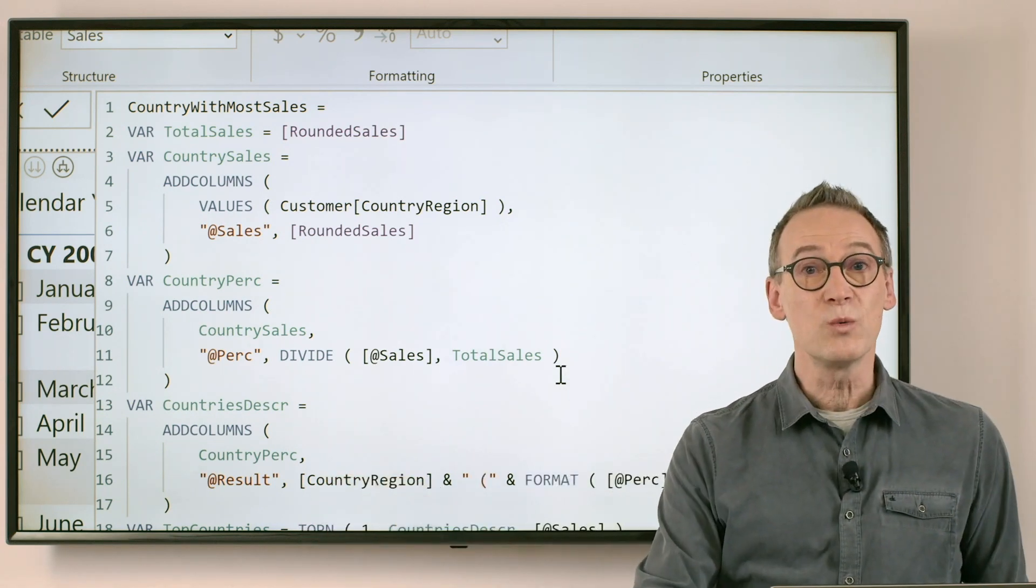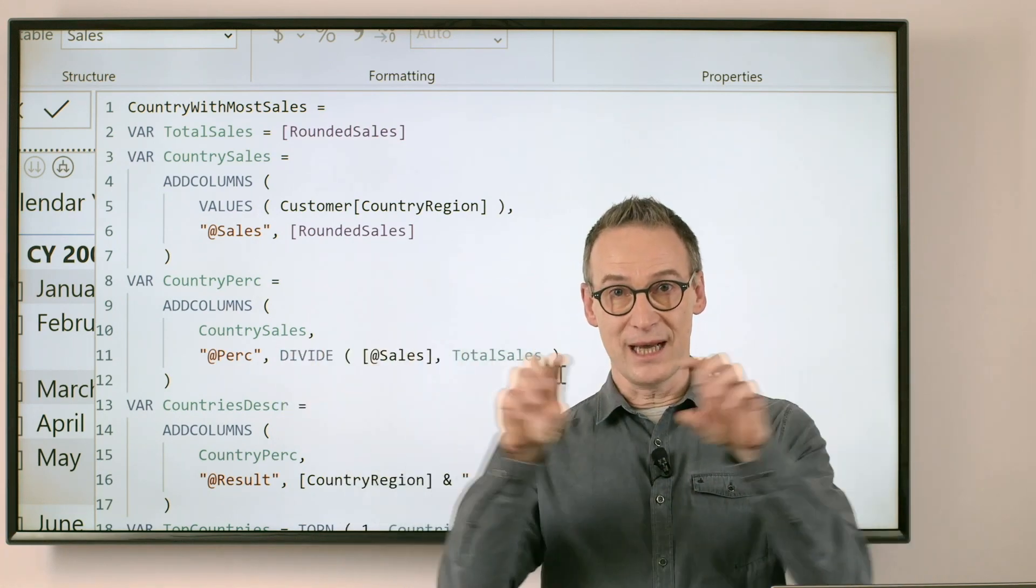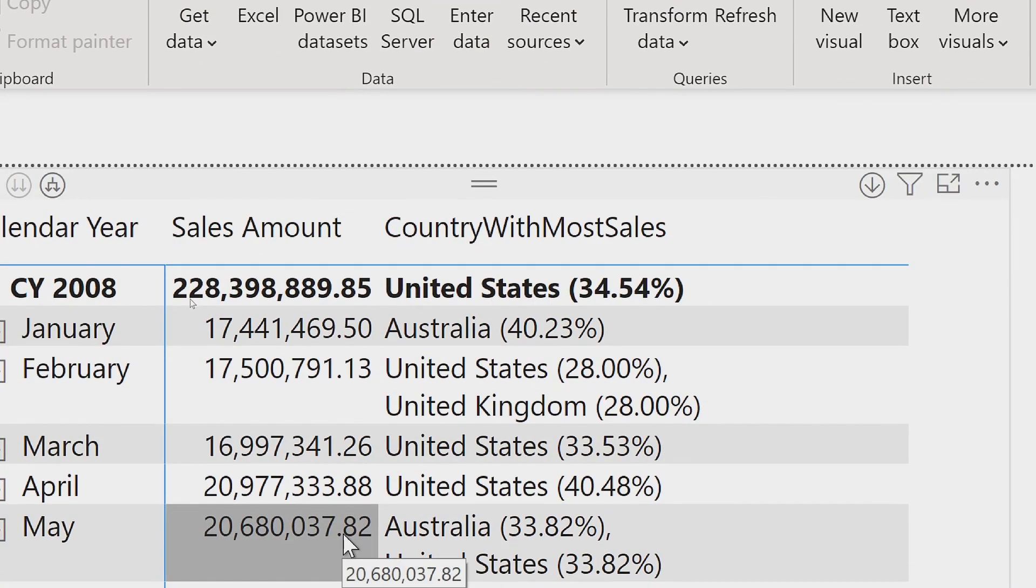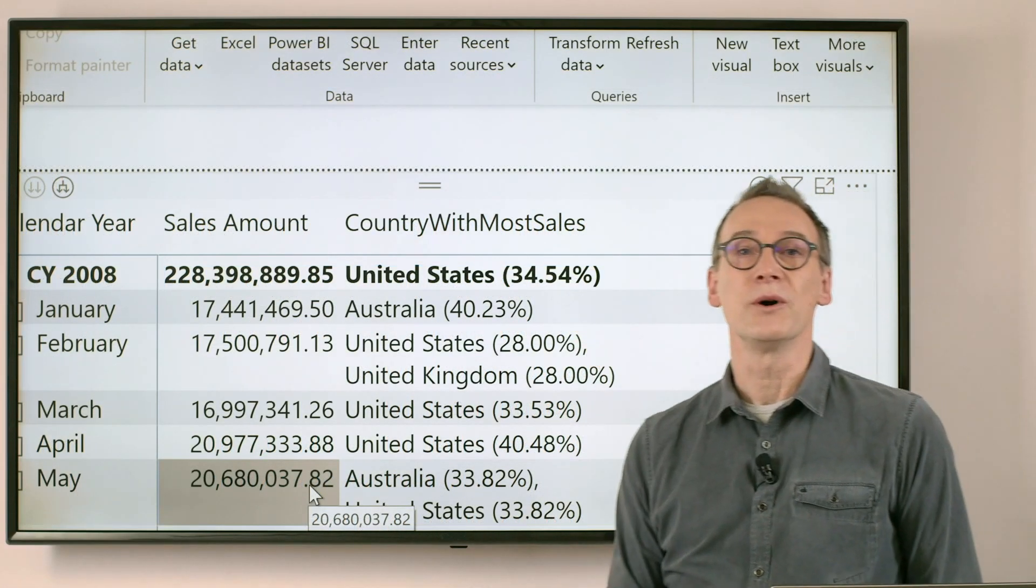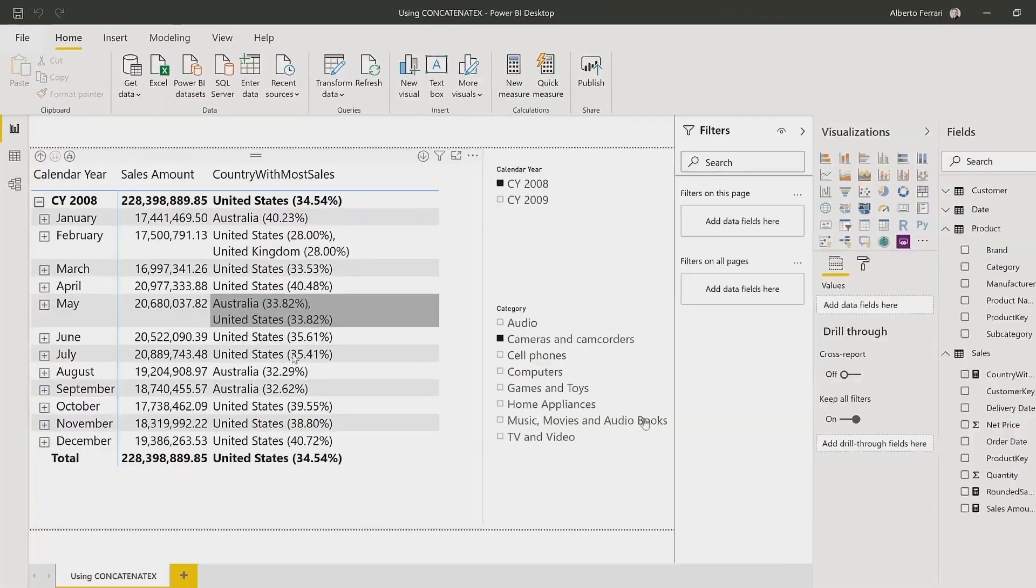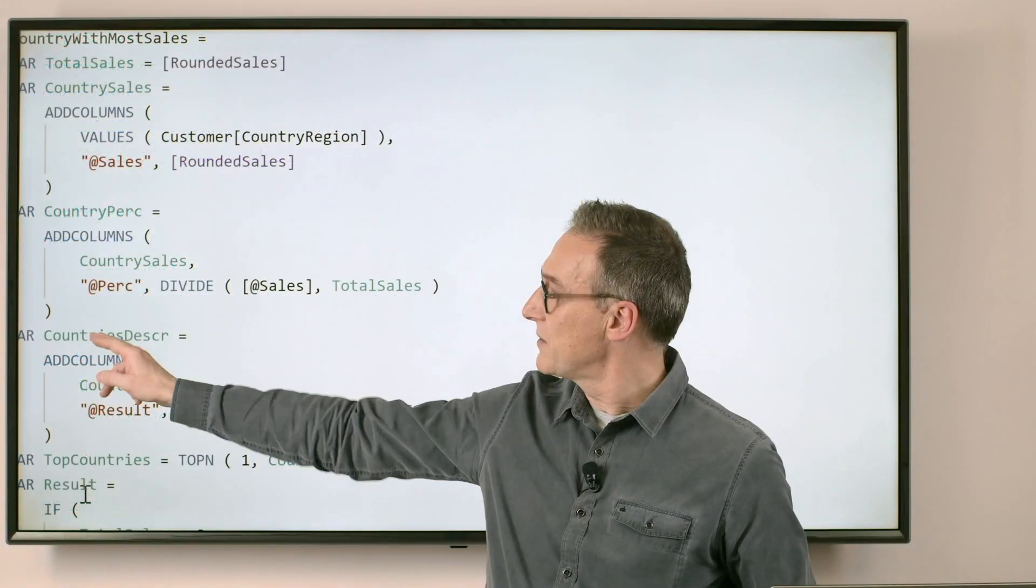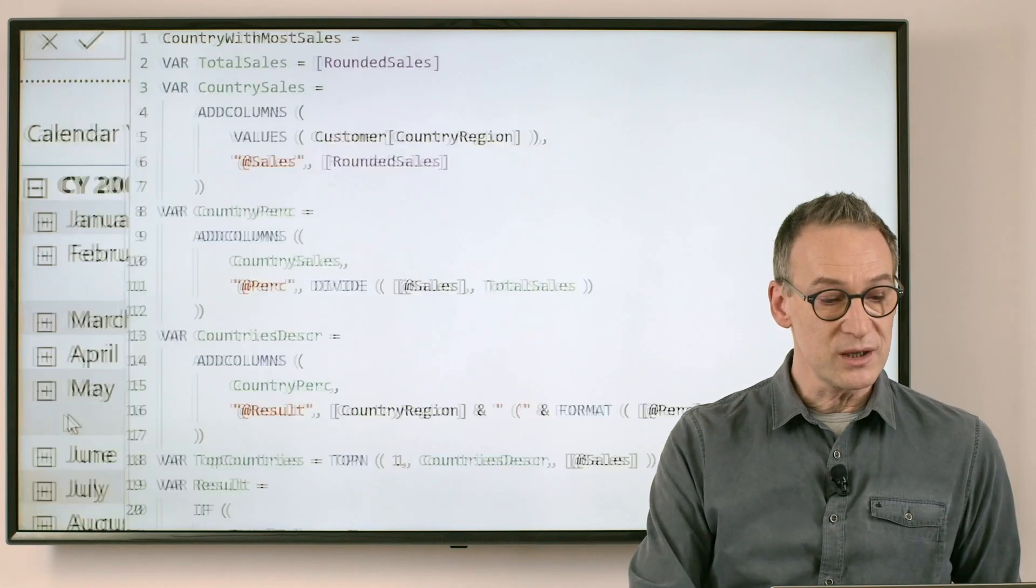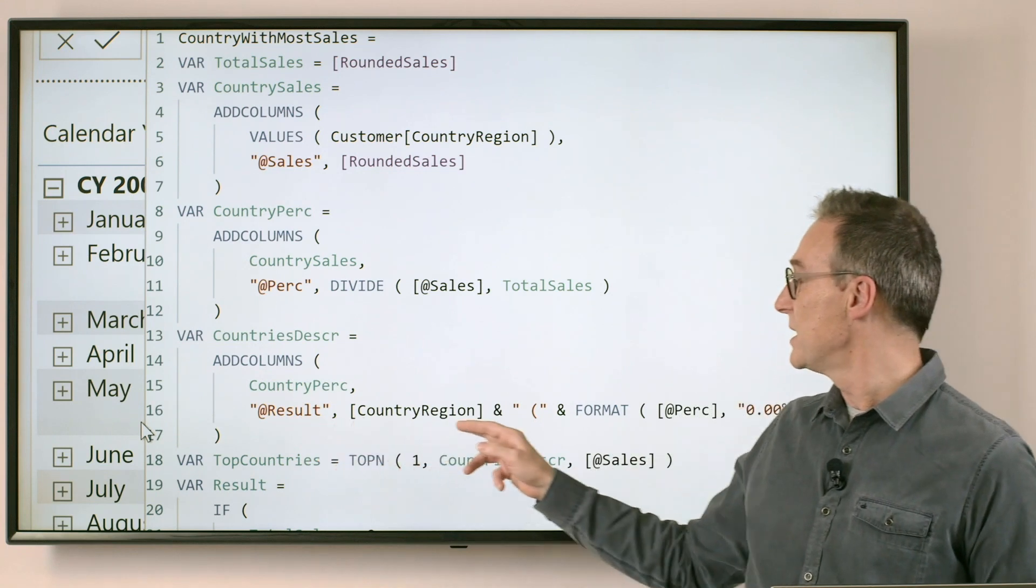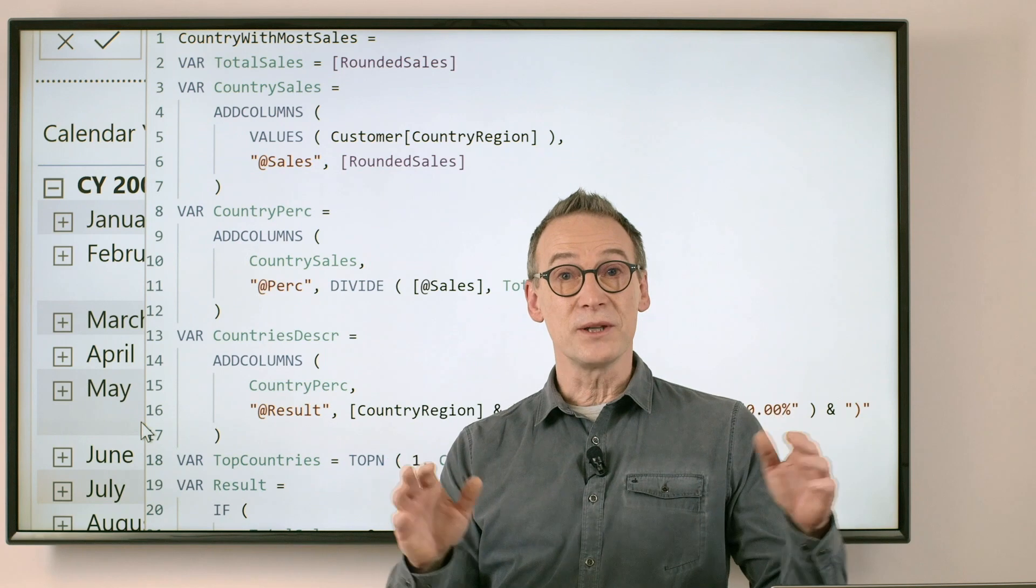And finally, because what we want to show is the country with the percentage together as a description. Let's take a look at the result, which is here. It's United States and then 34.64%, that is a string that we need to construct. And this is happening in this variable, country description, where we add a new column with the country region and then the percentage formatted as a string. Now the table is ready,